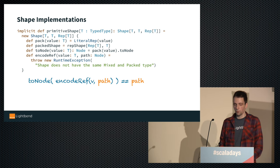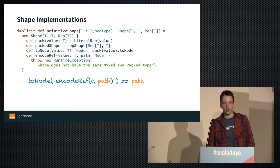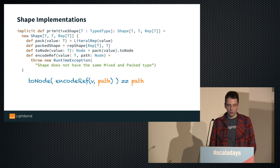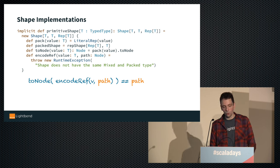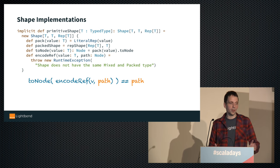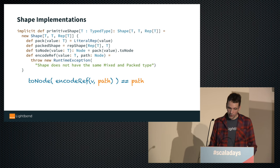For primitive shapes, we define a Shape[T, T, Rep[T]] where T has a TypedType. pack creates a LiteralRep, and packedShape returns the RepShape. toNode cheats by calling toNode on whatever we pack to. But there's a problem with encodeRef: the contract says encodeRef plus toNode must give back the same path, but if v is an Int like 42, you cannot encode a path into the number 42. So we just throw an exception, which might become a problem later on.